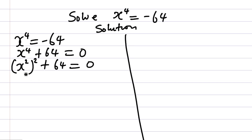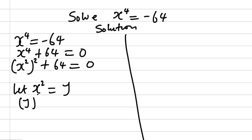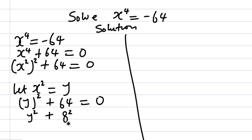Let's say that X squared equals Y. So anywhere I see X squared I'll put Y. This will now be Y all squared plus 64 equals zero — which is saying Y squared plus 8 squared equals zero, since 64 is simply 8 squared.